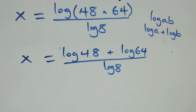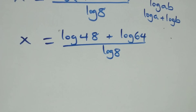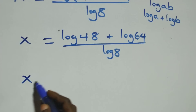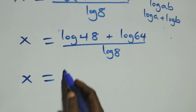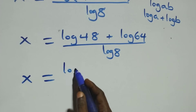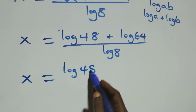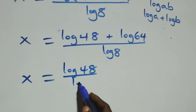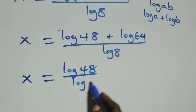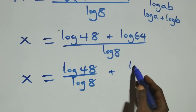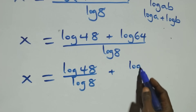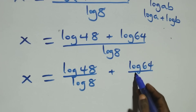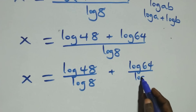Then, in the next step here, we separate this into two fractions. We have x equals log 48 over log 8 plus log 64 over log 8.